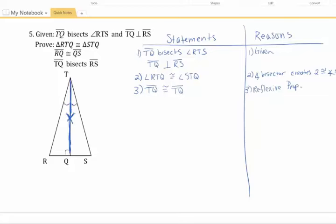And then last but not least, up here, they told me about some perpendicularity. So when things are perpendicular, I have two right angles that are therefore congruent. It always takes two steps. Step one, identify the right angles. Angle TQR and angle TQS are right angles because perpendicular lines form right angles.